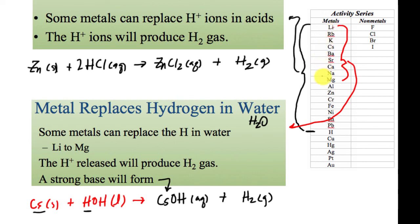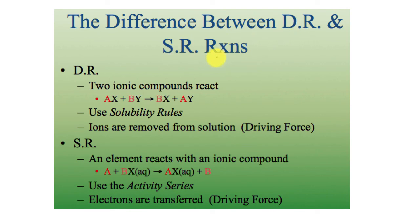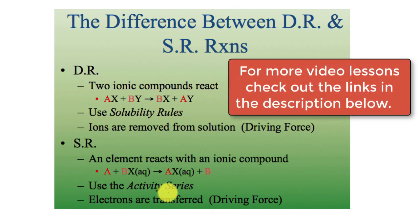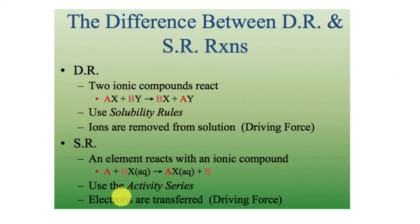Which metals replace hydrogen in water? Lithium down to magnesium. The periodic table with the activity series you have is marked, so those two areas are indicated so you'll know which metals replace other metals and which ones replace hydrogen ions in water versus in acid. As for the differences between double replacement and single replacement reactions: the basic format differs; solubility rules are used for double replacement while the activity series is used for single replacement; double replacement removes ions from solution by forming a precipitate or water, while single replacement involves the transfer of electrons.